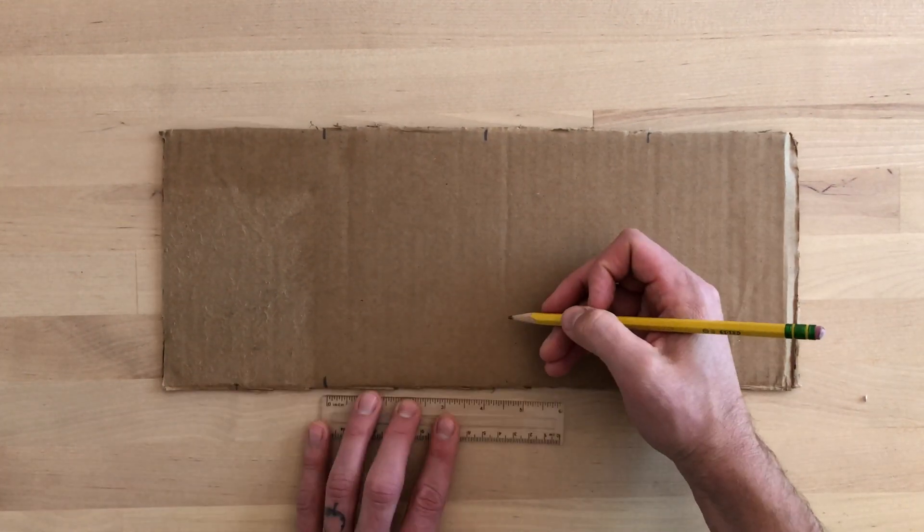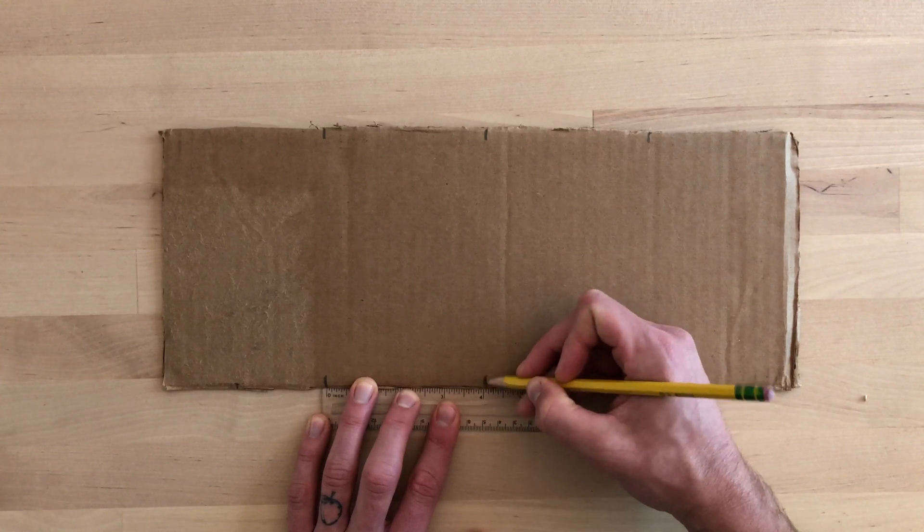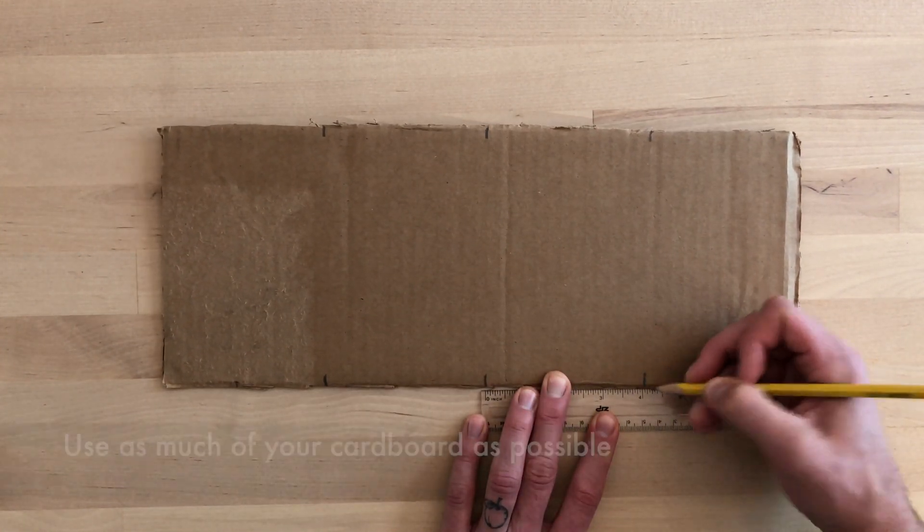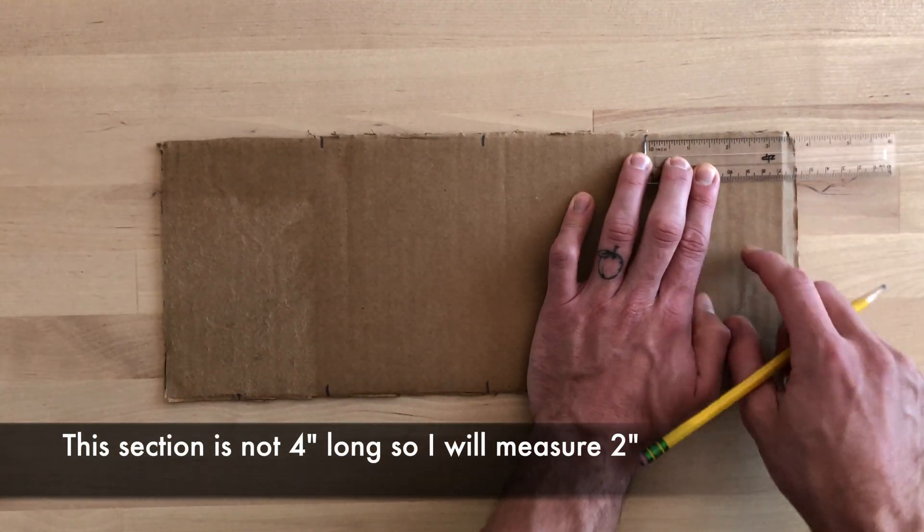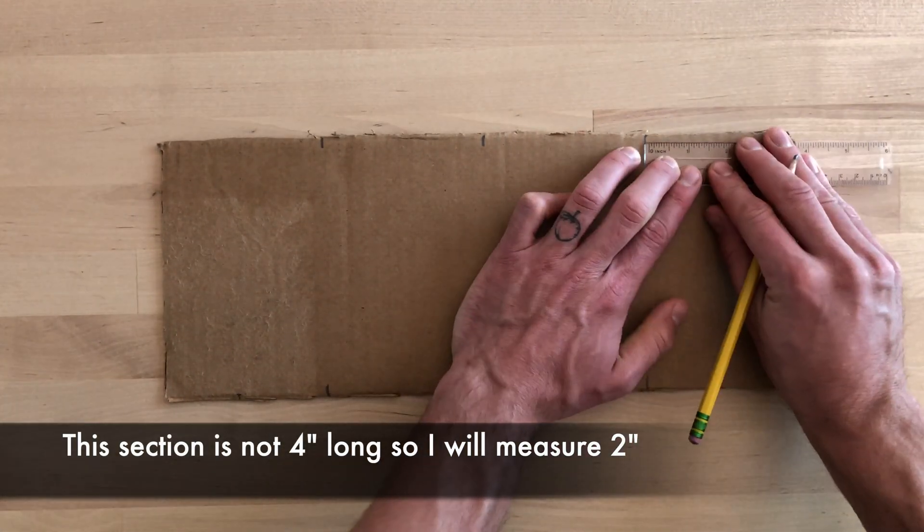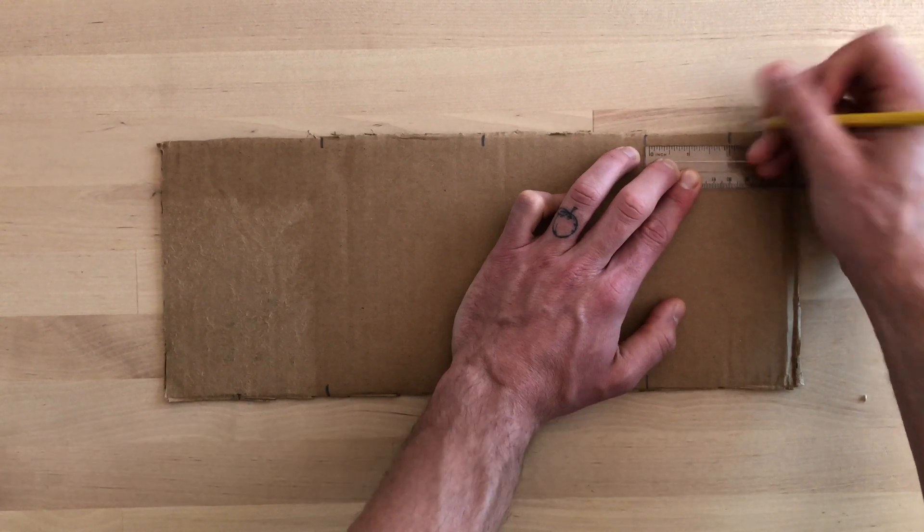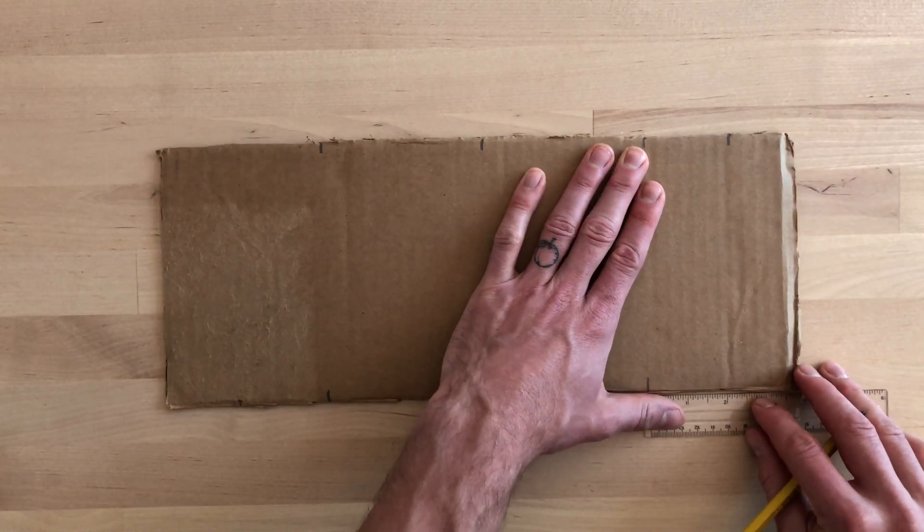Your piece of cardboard may be bigger or smaller than mine, and that's okay. Just make sure that you use as much as you can. For example, this section is not four inches long, so I'm going to measure two inches. That way I can get an extra constructor out of this section.